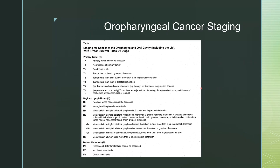Oropharyngeal cancer staging uses the TNM system. The T is the primary tumor, measured in terms of less than or greater than two centimeters, less than or greater than four centimeters, and invasion of adjacent structures. The lymph nodes are rated NX — not assessed — zero, one, two, or three, based on lymph node size and location. Distant metastases are usually determined on full-body PET scan or other imaging.